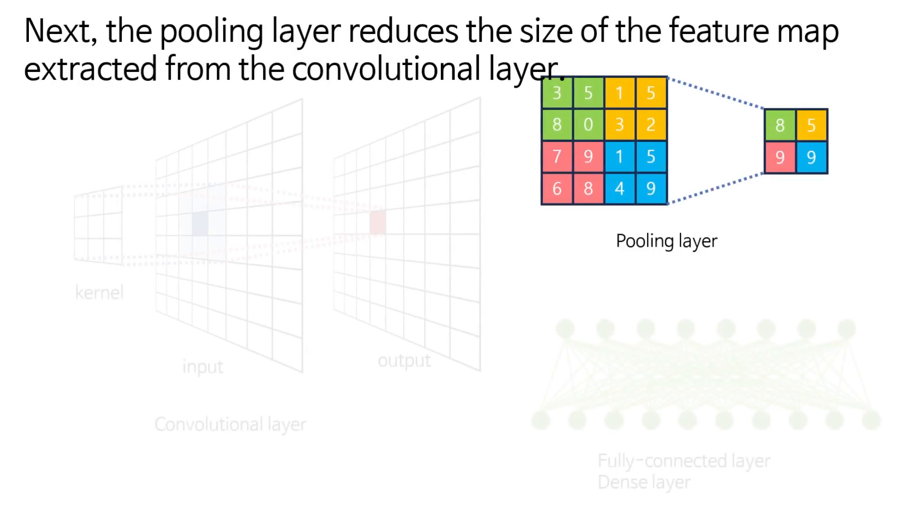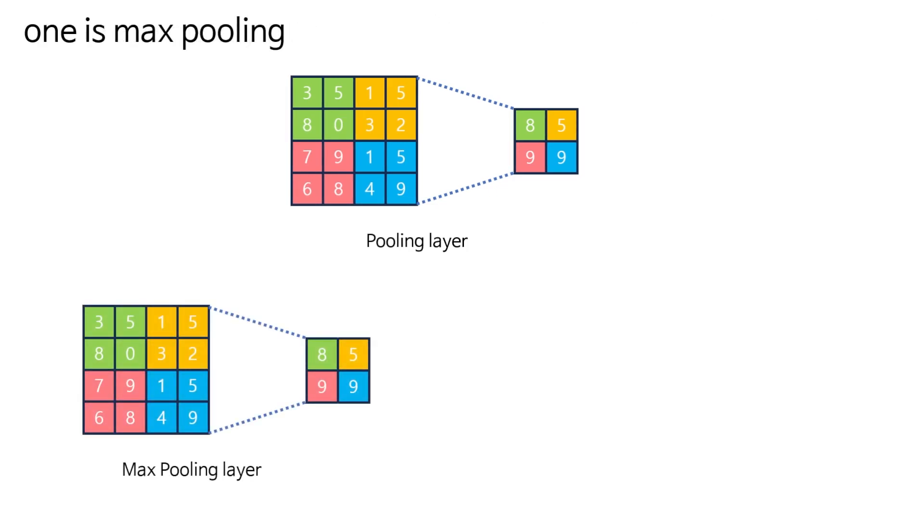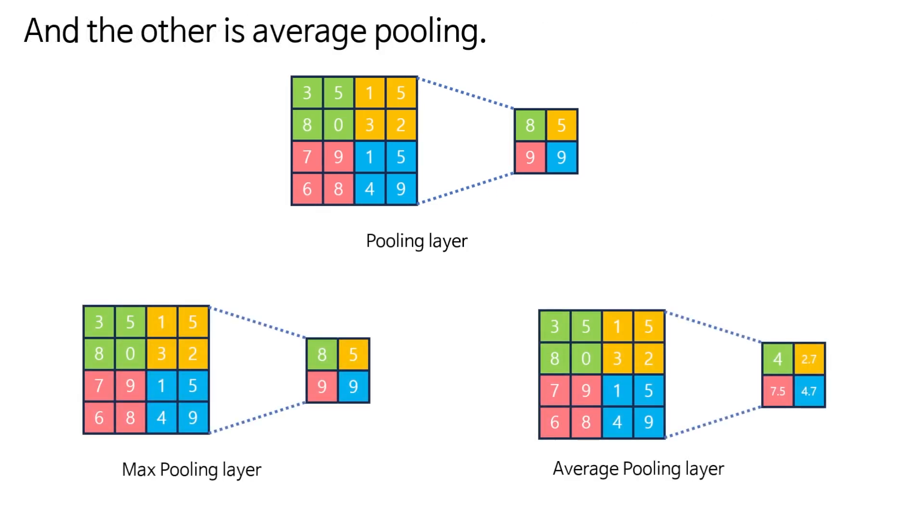Next, the pooling layer reduces the size of the feature map extracted from the convolutional layer. There are mainly two types of pooling layers used in CNNs: one is max pooling and the other is average pooling.